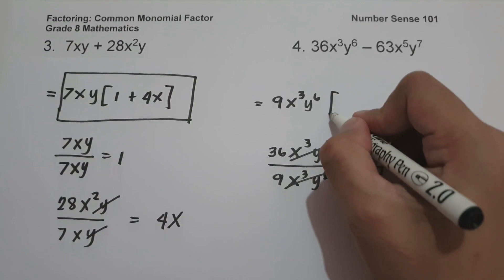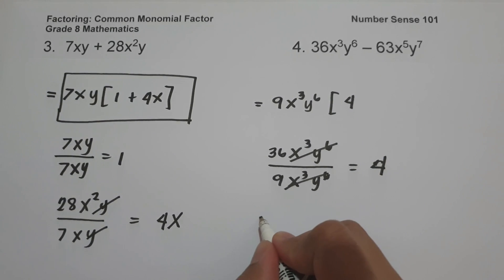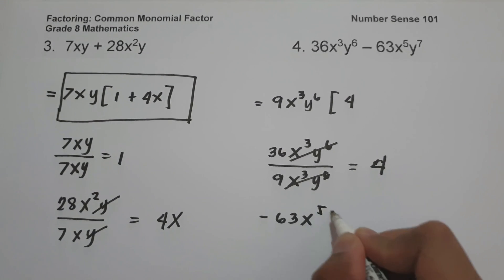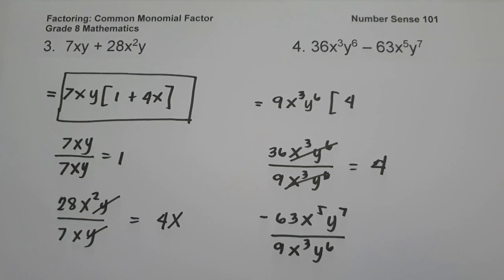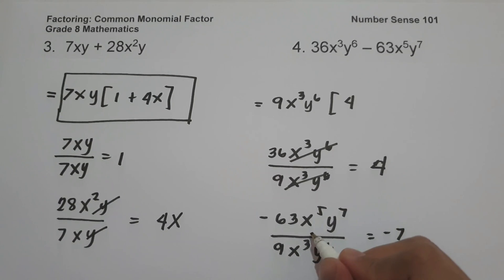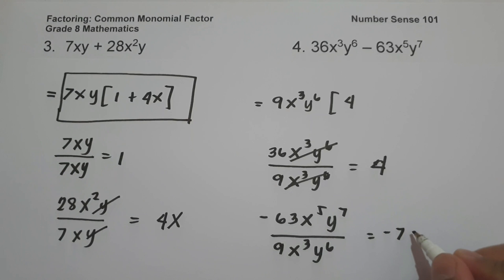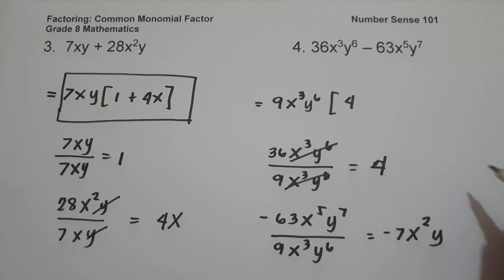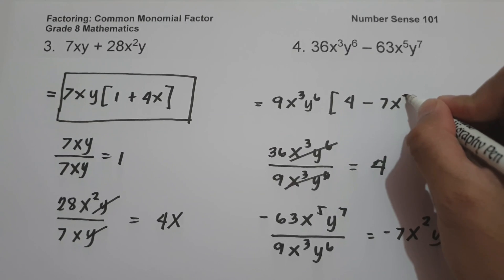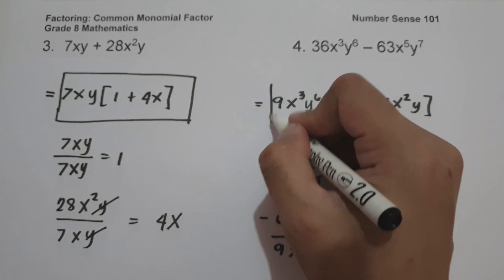Then let us have negative 63x⁵y⁷ divided by 9x³y⁶. 63 divided by 9 is negative 7. x⁵ divided by x³ — we simply subtract the exponents — is x². And y⁷ divided by y⁶ — subtracting exponents — is simply y. So we are going to have negative 7x²y, and this will be our answer.